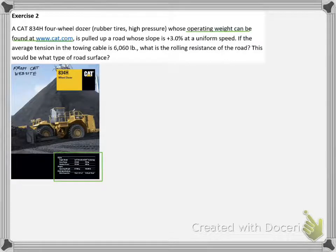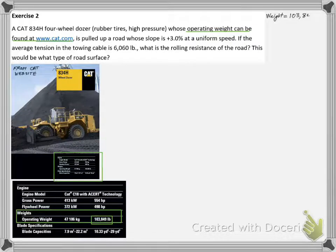We know the dozer maker and model which we can retrieve its data sheet from the maker website. We are looking for the operating weight of the dozer which turns out to be 103,849 pounds.